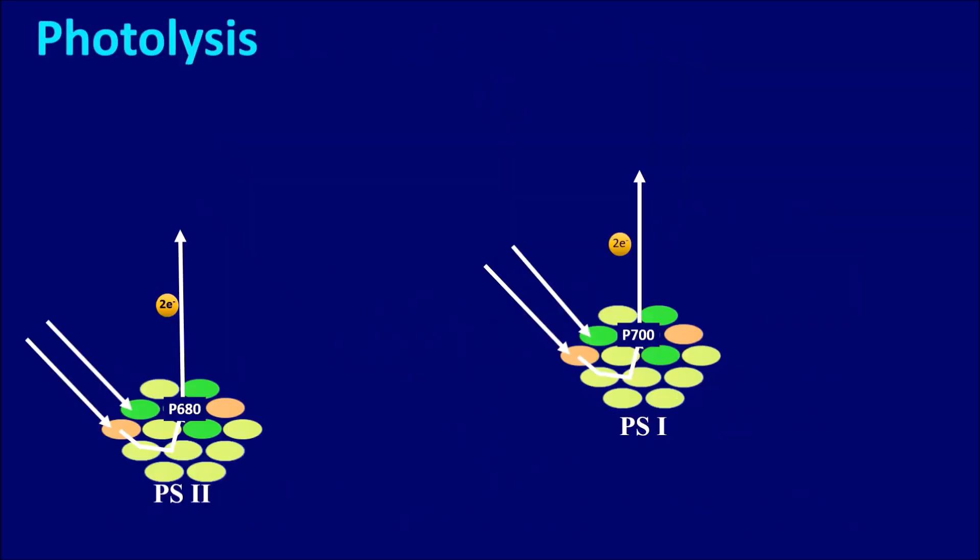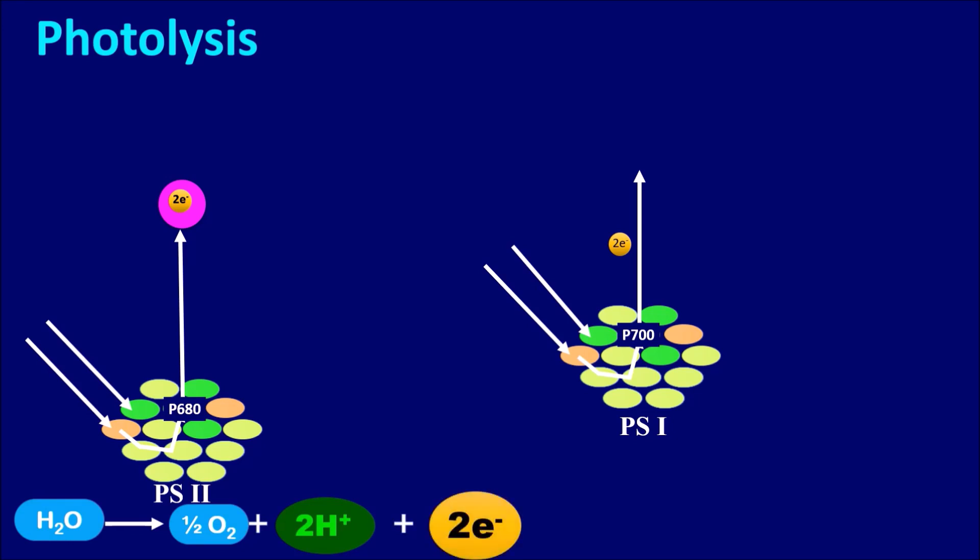Photolysis: When the electrons are excited from the chlorophyll, it will be received by electron acceptor such as pheophytin. This action stimulates the water molecule to split and form oxygen, protons and electrons. This process is known as photolysis. The resultant electrons move towards the reaction center to reduce it.